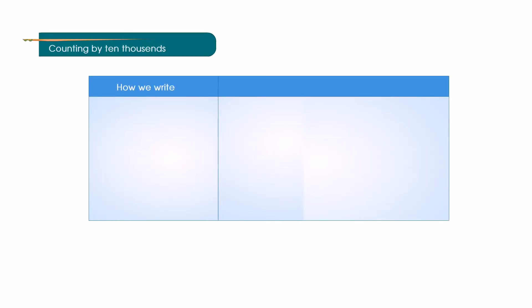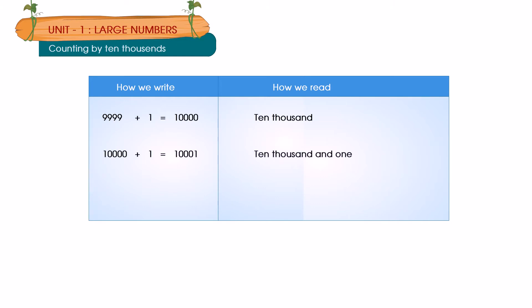How we write versus How we read: 9999 plus 1 equals ten-thousand. Ten-thousand plus 1 equals ten-thousand and one. Ten-thousand and one plus one equals ten-thousand and two. Ten-thousand and nine plus one equals ten-thousand and ten. Ten-thousand and ten plus one equals ten-thousand and eleven.